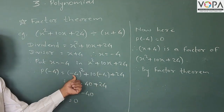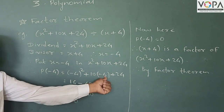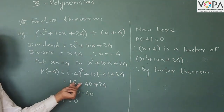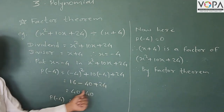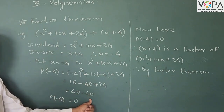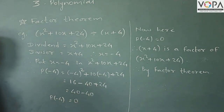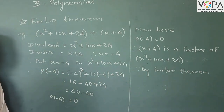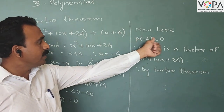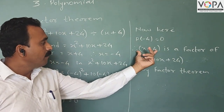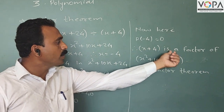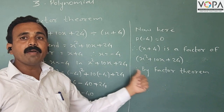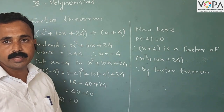The square of minus 4 is 16, then 10 times minus 4 gives minus 40, plus 24. Adding the positive numbers: 16 plus 24 equals 40, and minus 40. So 40 minus 40 equals 0. Since the value of the polynomial at x = −4 is 0, meaning the remainder is 0, we call that x + 4 is a factor of x² + 10x + 24 by the factor theorem.